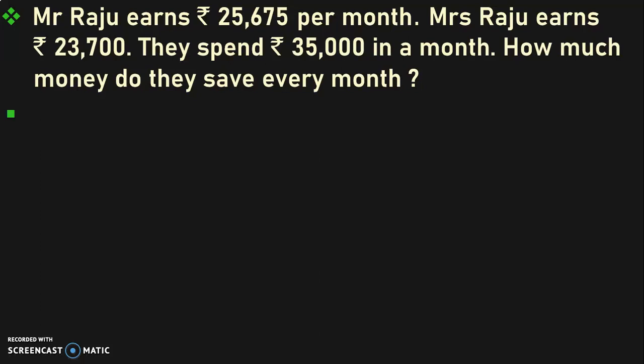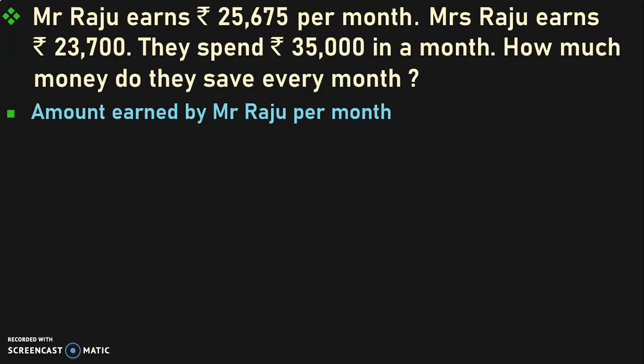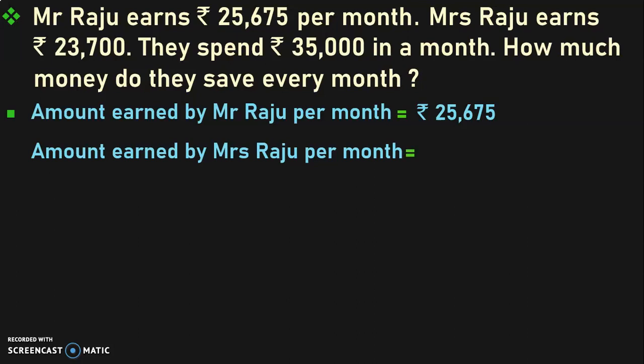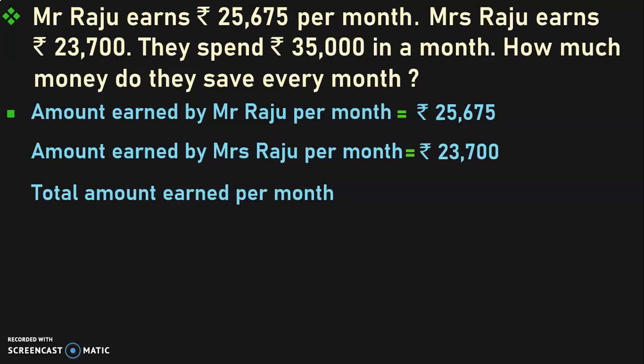Mr. Raju earns Rs. 25,675 per month. Mrs. Raju earns Rs. 23,700. They spend Rs. 35,000 in a month. How much money do they save every month? Amount earned by Mr. Raju per month is equal to Rs. 25,675. Amount earned by Mrs. Raju per month is equal to Rs. 23,700. With these two details, we can find the total amount earned by Mr. and Mrs. Raju per month, which is Rs. 25,675 plus Rs. 23,700.